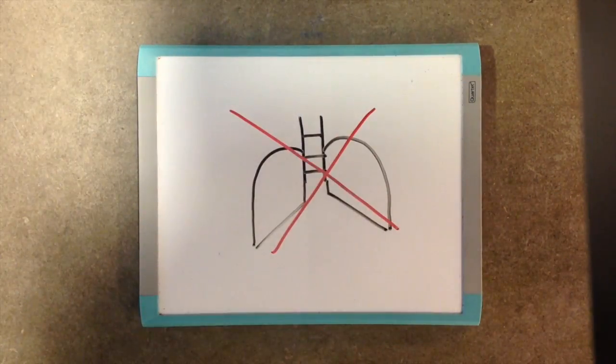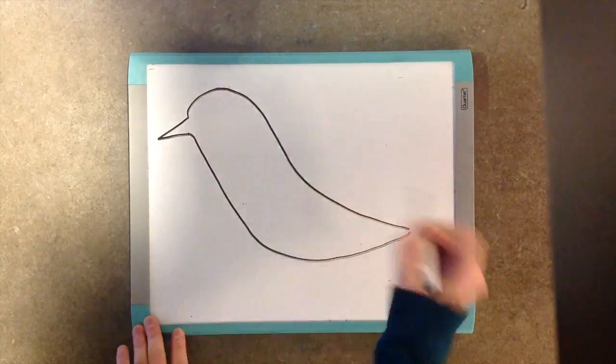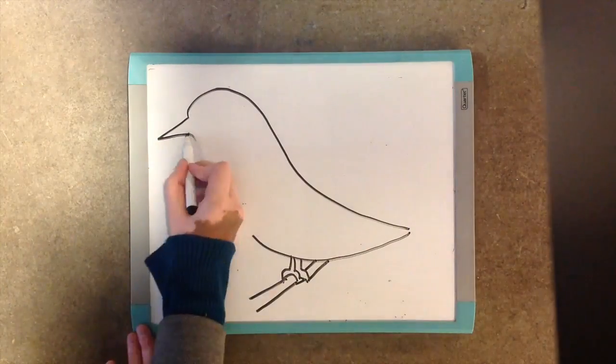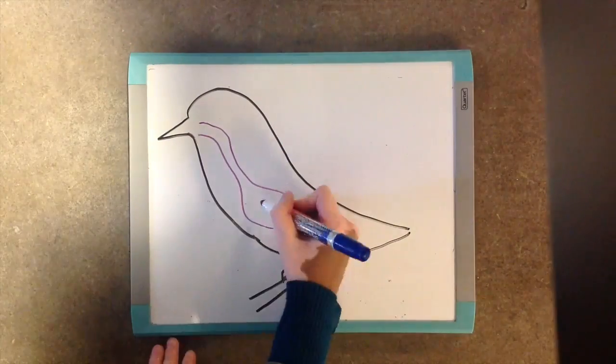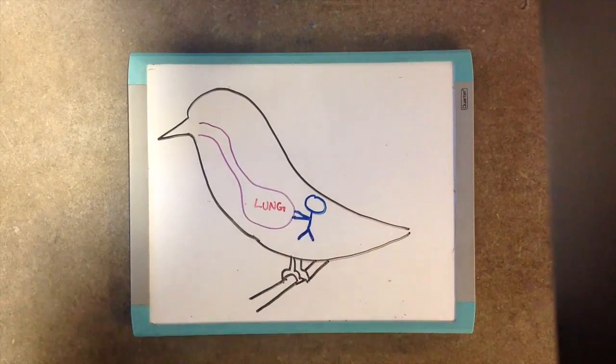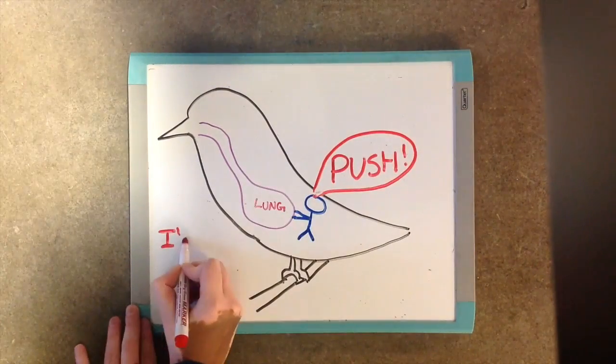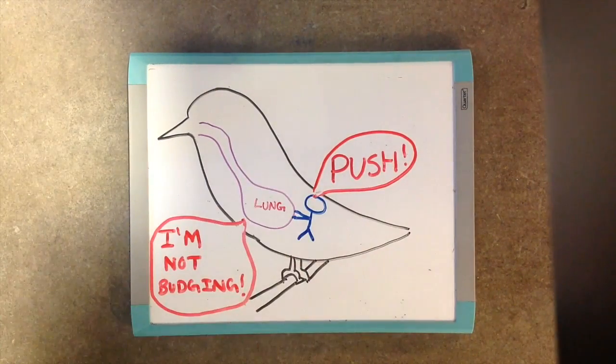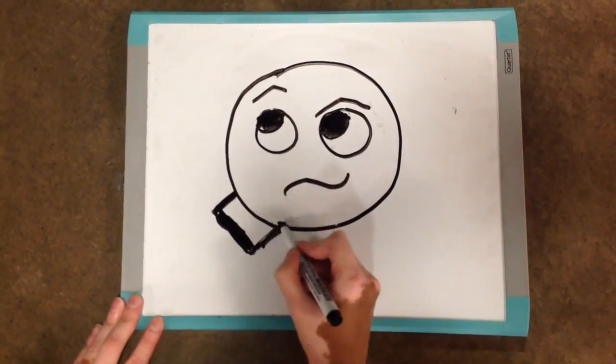Unlike mammals, birds have rigid lungs. Therefore, the volume of their lungs doesn't change throughout the entire respiration process. So how does air move through the lungs?